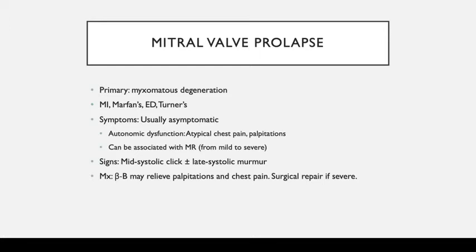Mitral valve prolapse is the most common valve problem, especially common in young women, and is caused by myxomatous degeneration. It can also show up in MI, Marfan's, Ehlers-Danlos, and Turner syndrome, and can be associated with mitral regurgitation. Patients are usually asymptomatic but sometimes may complain of atypical chest pain or palpitations. Signs include a mid-systolic click and late-systolic murmur. If the patient is asymptomatic or it's very mild, no treatment is needed. Beta blockers can be given for symptoms, and if severe, surgical repair is indicated.